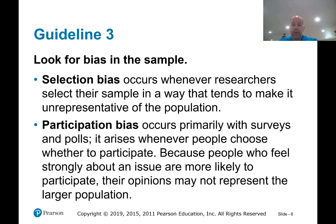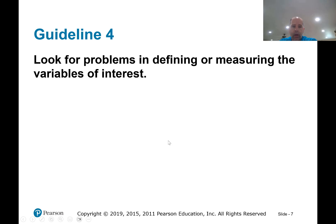Participation bias primarily occurs with surveys and polls. It arises whenever people choose whether to participate. We have voluntary response bias, where only people who feel strongly about a particular topic will bother to fill out the survey. Then there's non-response bias, where people may not feel like it or may not be able to respond, so those people don't get counted.